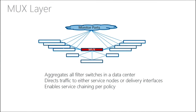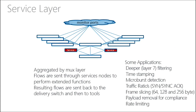The mux piece is just the aggregation for all the filter ports, and it's the layer that decides whether to send traffic to the service layer or to the delivery layer. The service layer is the very expensive piece — it's aggregated by the mux layer and all the flows are sent to it. It can do deep packet inspection — for example, if there is a security incident, we send traffic through it to investigate or match against virus signatures. It will do timestamping, micro-burst detection, and can give us ratios between SYN and SYN-ACK traffic. It does frame slicing so only the headers of the packet get sent downstream, and it will also remove payloads.